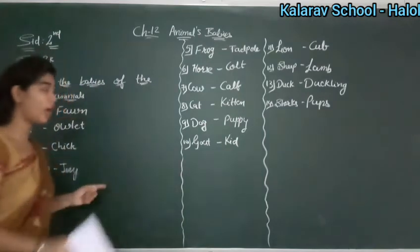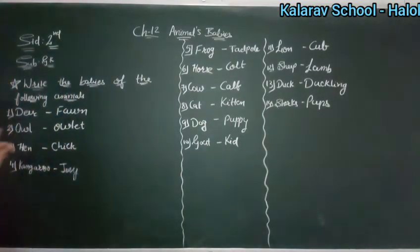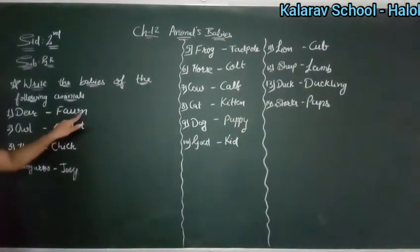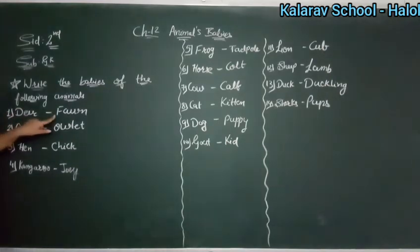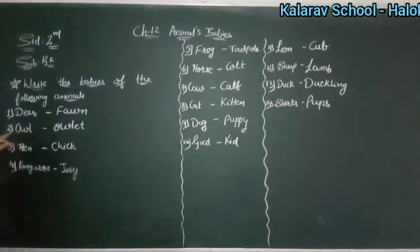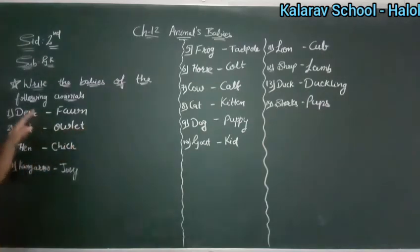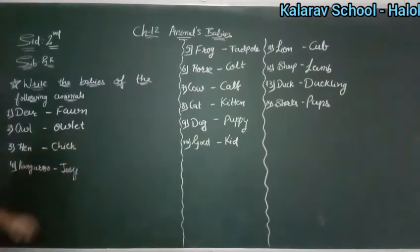Now we are going to revise it with the spellings. Deer — fawn. What is the spelling of fawn? F-A-W-N. Fawn. So deer — fawn. Owl — owlet. What is the spelling of owlet? O-W-L-E-T. Owlet.